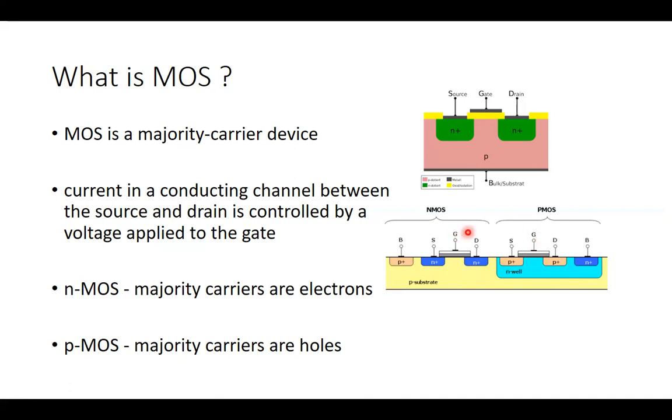To summarize: in the N-MOS transistor, the majority carriers are electrons. In the P-MOS transistor, the majority carriers are holes. The current in the conducting channel between source and drain in each transistor is controlled by the voltage applied at the gate. Final line: MOS is a majority carrier device.